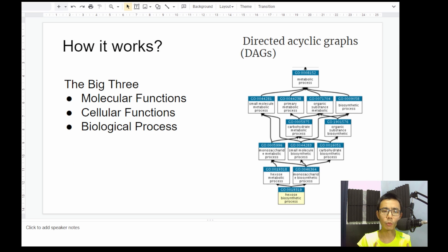So how does it work? It's actually through something called the directed acyclic graph called DAG. GO is actually structured in three big chains, the molecular function, the cellular component, and the biological process. So you can see on the right there is a metabolic process on the top chain, and there are sub-chains under this main chain, for example, small molecule, primary organic biosynthetic process.